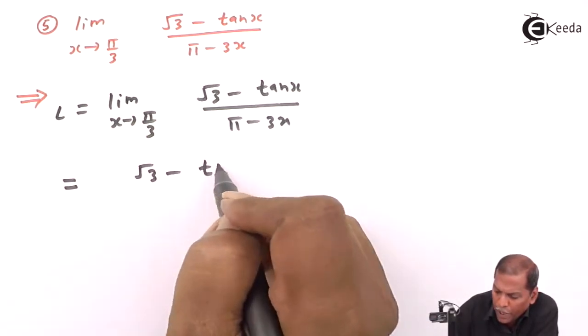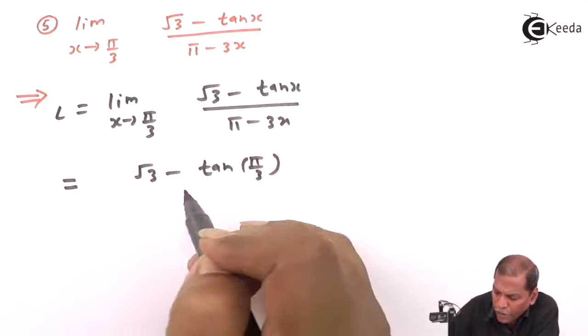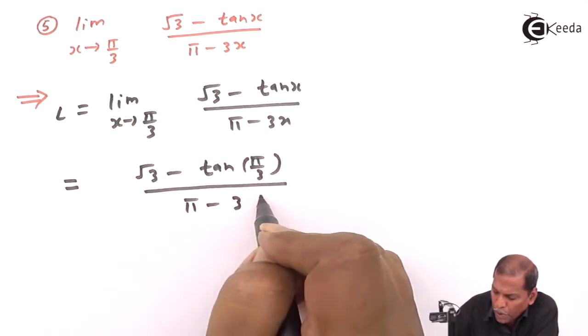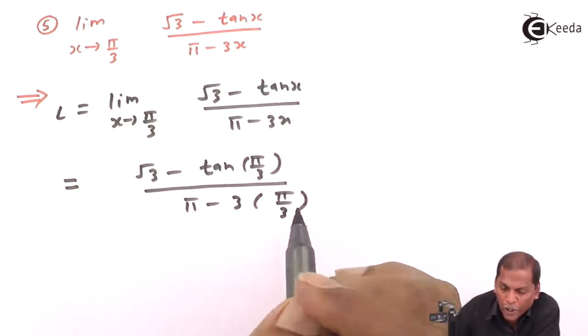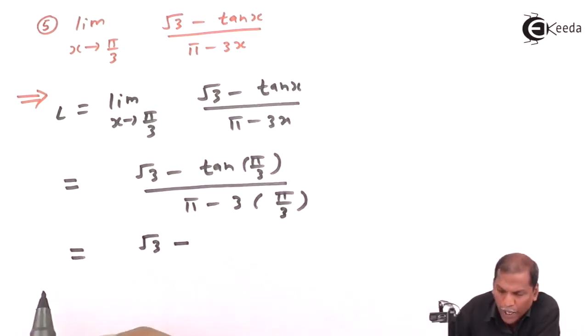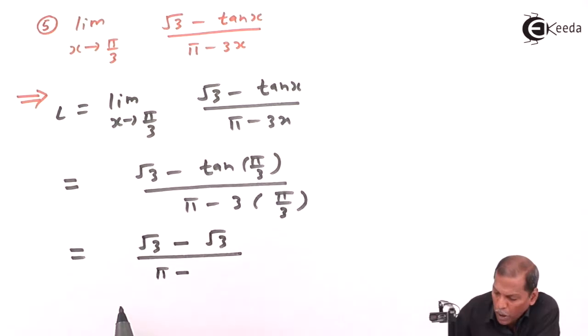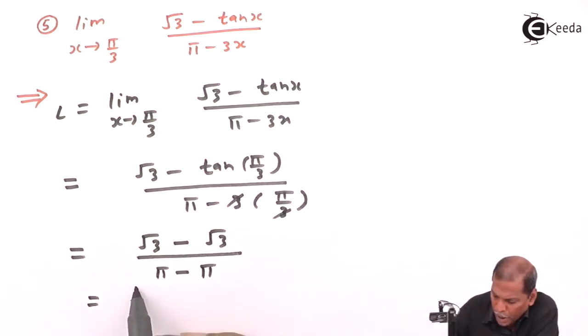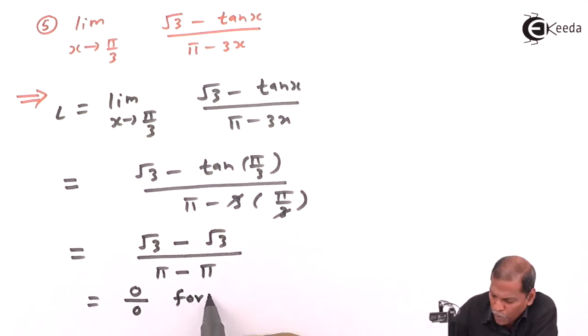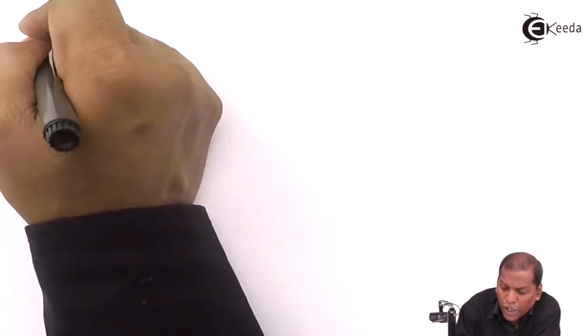Substituting x = π/3 gives (√3 − tan(π/3)) / (π − 3·(π/3)). Now tan(π/3) = √3, so the numerator becomes √3 − √3 = 0. In the denominator, 3 and π/3 cancel to give π − π = 0. So this is of the form 0/0, which means we need to use the substitution method technique.